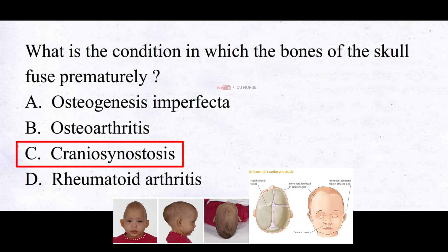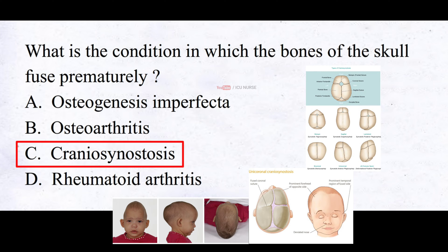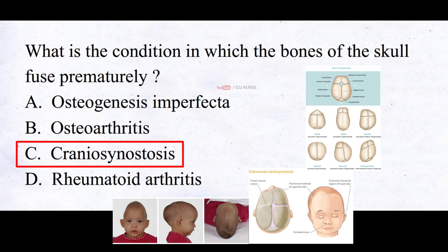Craniosynostosis is a condition characterized by the premature fusion of one or more cranial sutures in an infant's skull. This leads to abnormal skull growth and shape. The condition may occur sporadically without any known cause or can be associated with genetic syndromes. Some common types include sagittal synostosis, coronal synostosis, and metopic synostosis. The premature fusion of sutures can restrict skull growth in specific directions. Treatment often involves surgical intervention to release and reshape the affected sutures, allowing for normal skull growth and development.